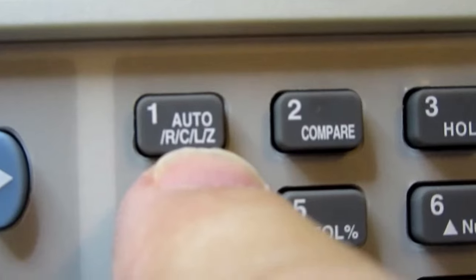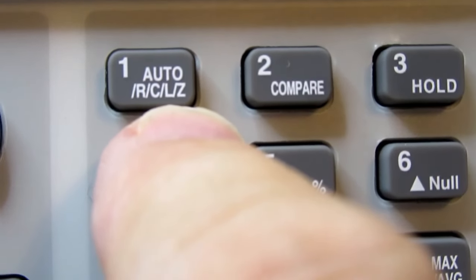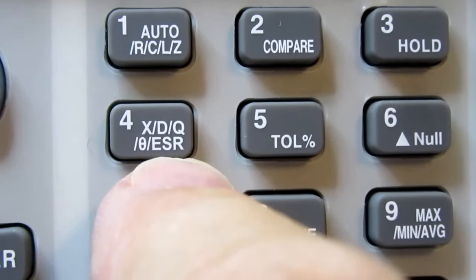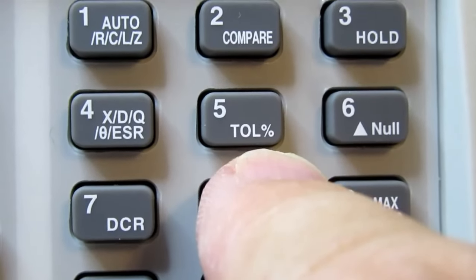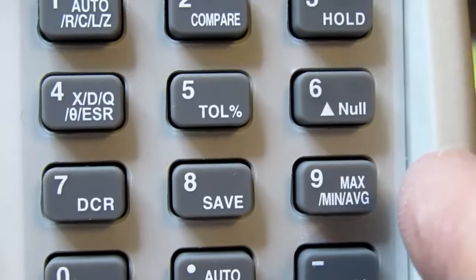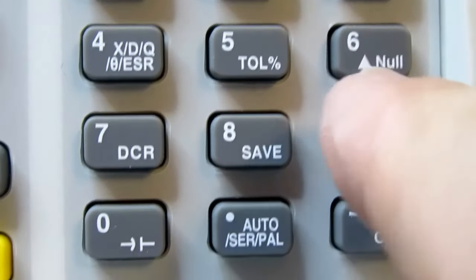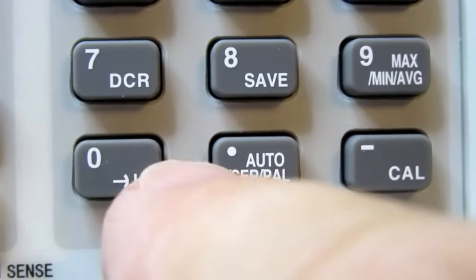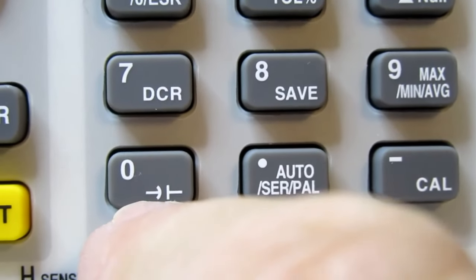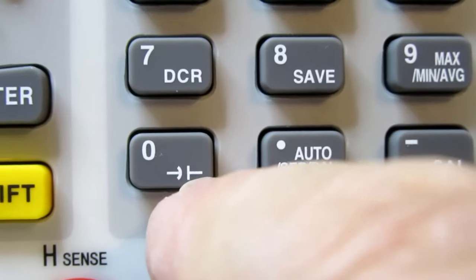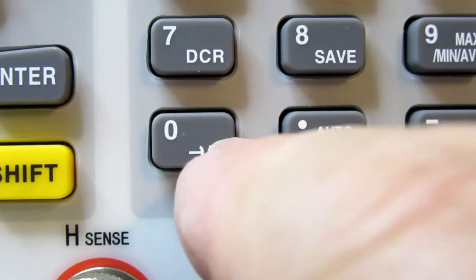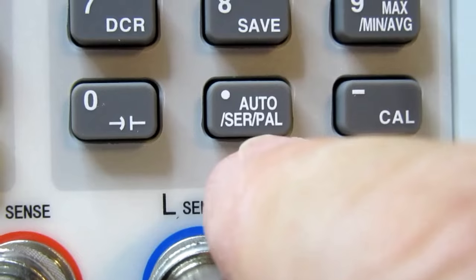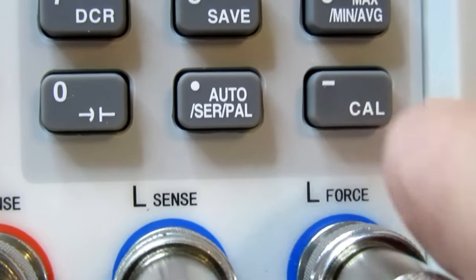You can push this button to change between Auto, R, C, L and Z. You can compare things. You can do a hold. You can select between X, D, Q, Theta and ESR. You can do a tolerance percent. There's null. DCR, save setting. Maximum, minimum, average. You can stipulate that you're testing a capacitor. I think this is shorthand for an electrolytic capacitor. Then auto, serial, parallel. And calibrate.